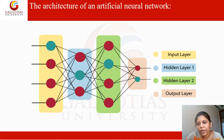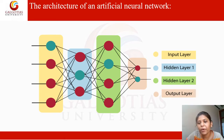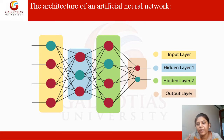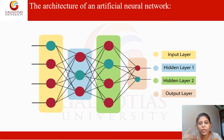The function of the input layer is just to accept the input or features from the users. The hidden layers are used to perform some functions on those features and predict the output at the output layer. For example, if we have a cat and a dog and we want to classify — when we give a picture it classifies whether it is a cat or a dog. For that, the user needs to give some features of the cat as well as the dog.